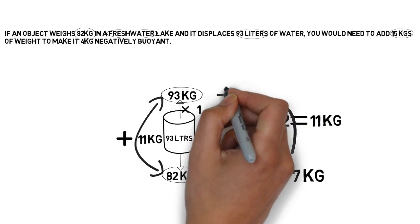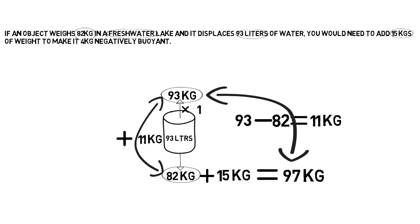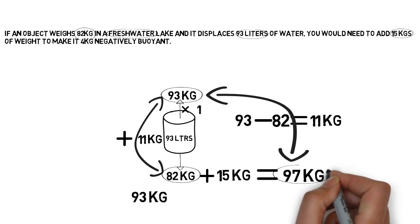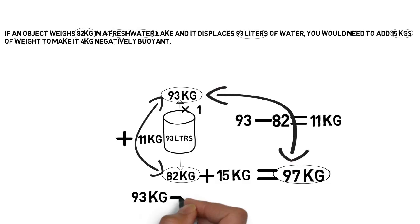So now when we're comparing the upward force and the downward force, we'll take the upward force that hasn't changed, 93 kilograms, and subtract the new downward force based on the fact we've added 15 kilograms to it.